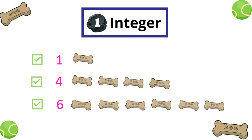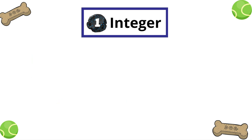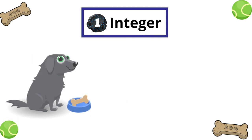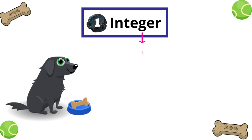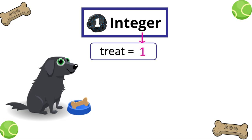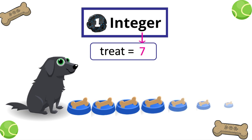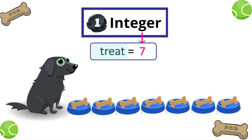Let's look at another example. Mo has one treat. One is an integer, and we can store it in a variable. But when she's a good girl, she might get two. Or seven. The variable treat stays the same, but the integer value it stores can change.